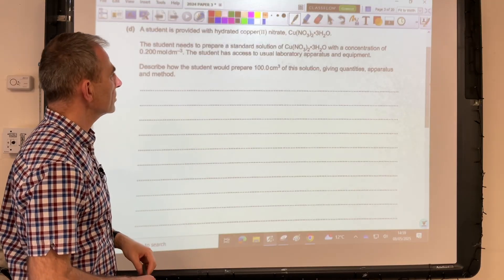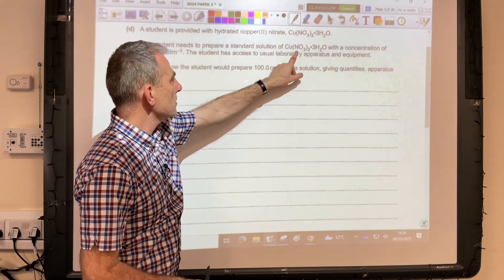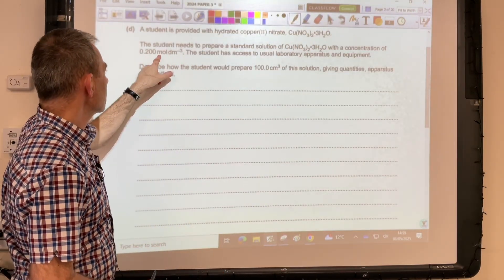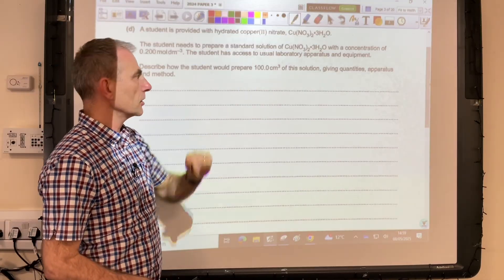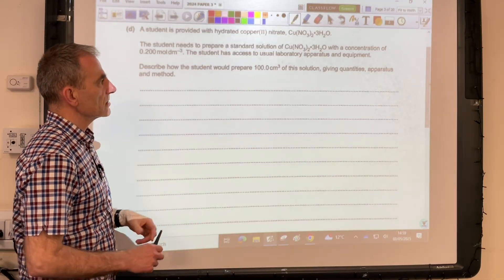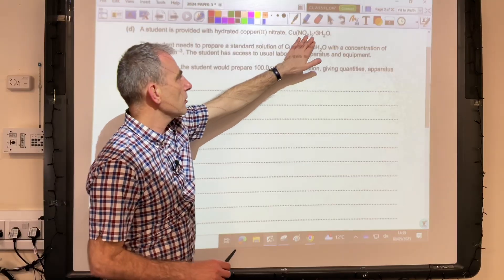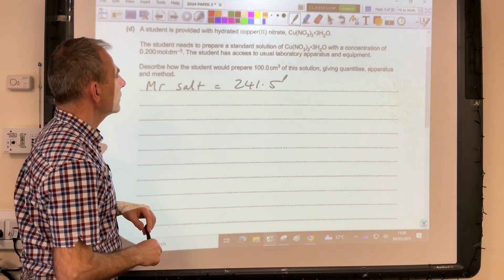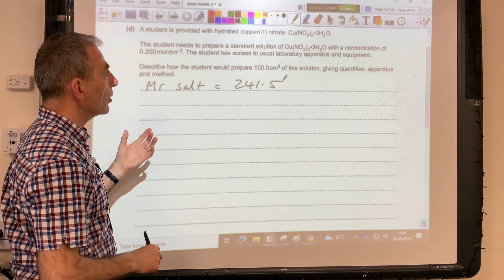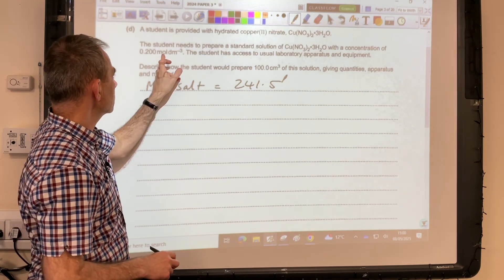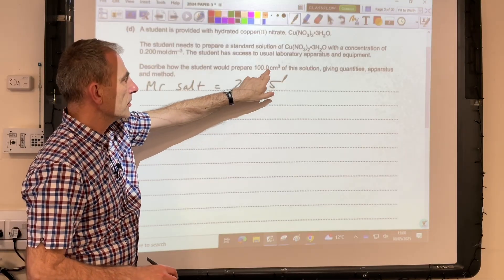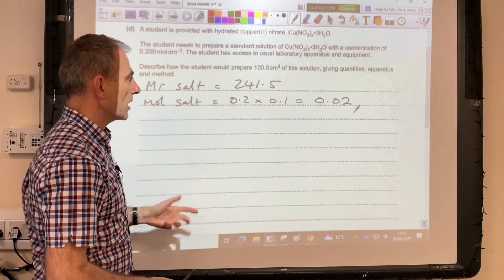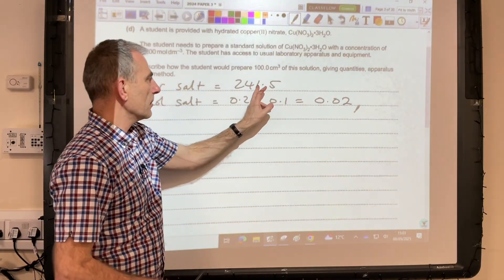Moving on to Part D: You've got the classic standard solution prep question. We've got to make this standard solution of copper(II) nitrate—hydrated copper(II) nitrate. It needs to have that concentration and that volume. The first thing we'll do is the calculation. We're going to need to know the Mr of the hydrated salt—that's coming out at 241.5. Next thing we're going to need to know is how many moles of salt we need for the solution. That's just concentration times that volume, but remember that's going to be in dm³. The moles of salt comes out at 0.02.